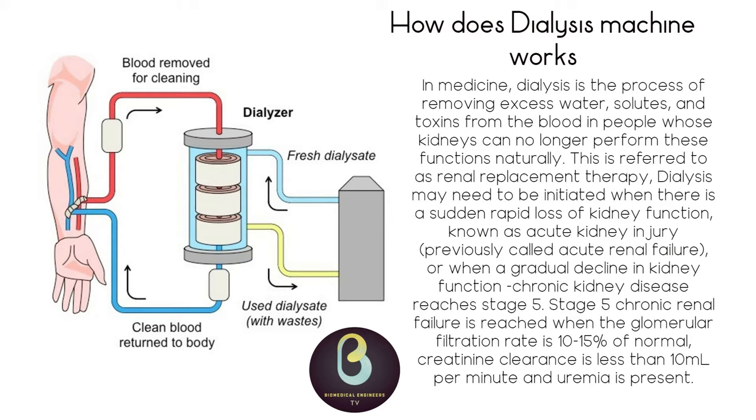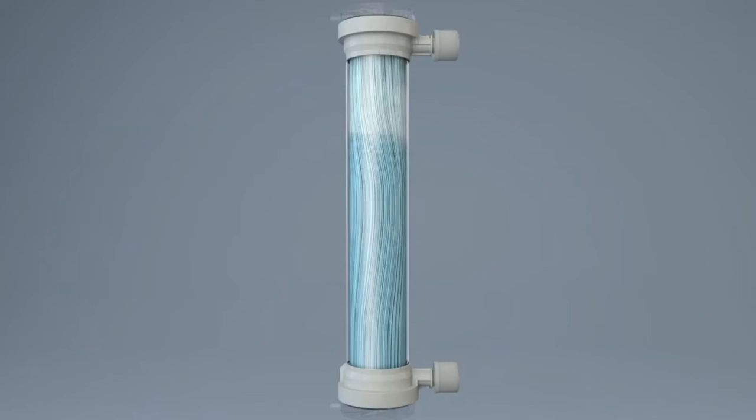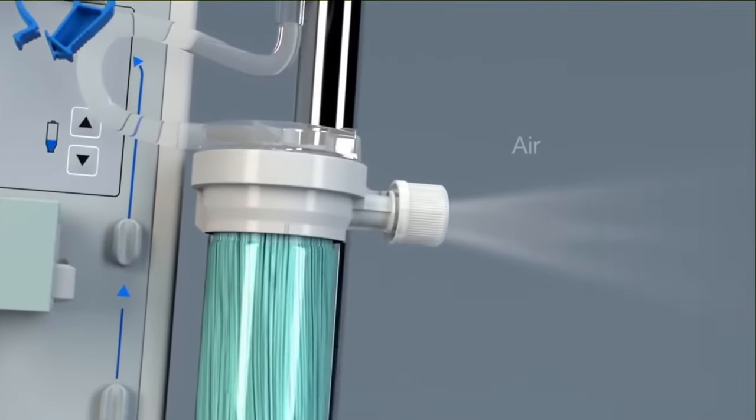Air bubbles in the dialysate cause the blood leak detector and the conductivity detector to malfunction. They also block part of the dialysate pathway, increasing channeling and masking parts of the membrane surface area. The heated and deaerated product water is then mixed with the concentrate to produce dialysate.